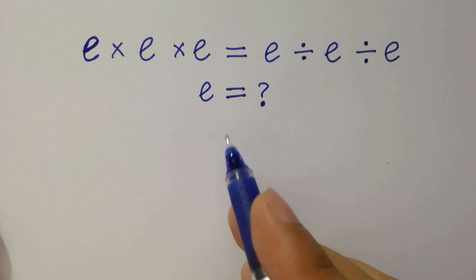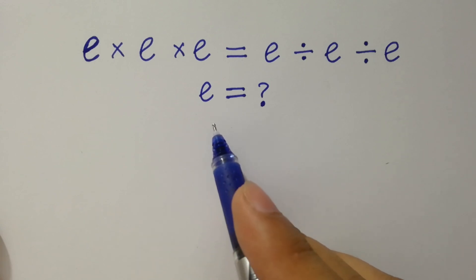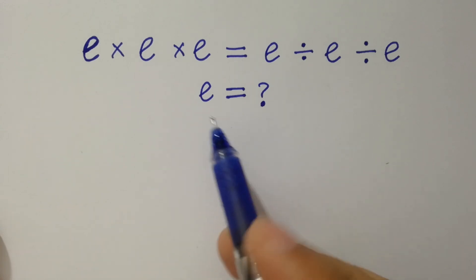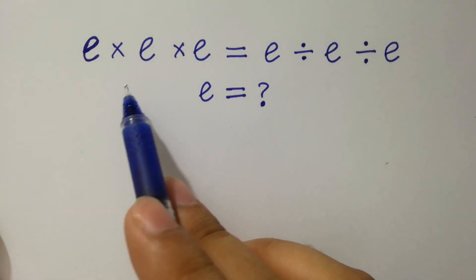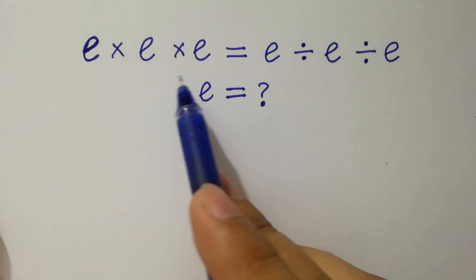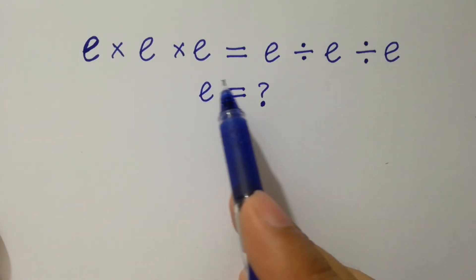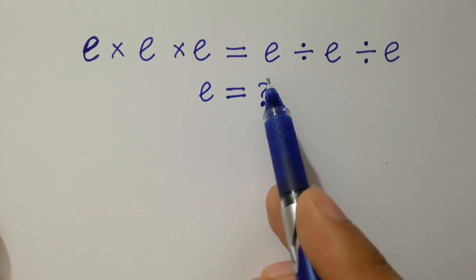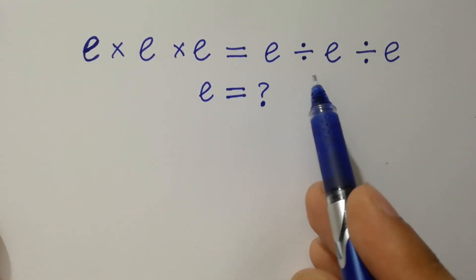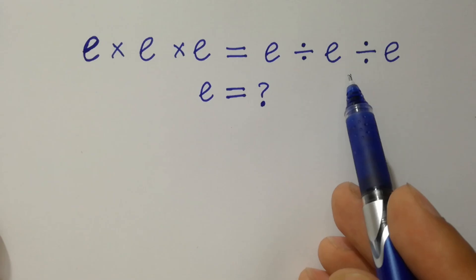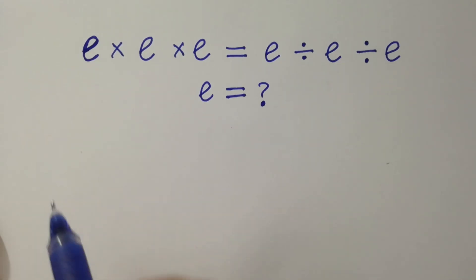Hello friends. Find the value of e if e times e times e equals e divided by e divided by e. Let's have a solution.